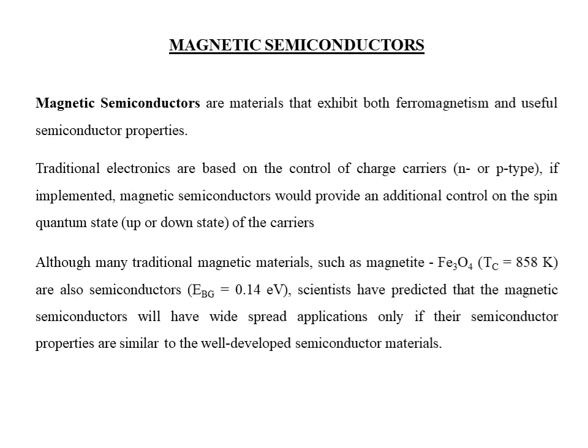Although magnetism and semiconductor properties coexist in some materials, scientists have predicted that in order to have widespread application of magnetic semiconductors, the semiconductor properties must be similar to those of well-developed semiconductors. This can only be realized by a material called a dilute magnetic semiconductor, often addressed in short as DMS.